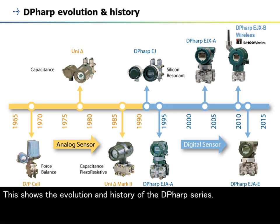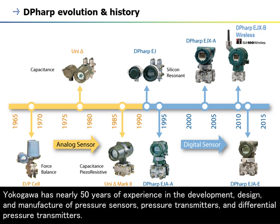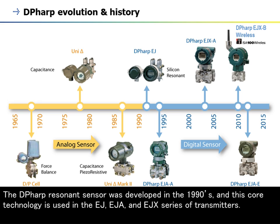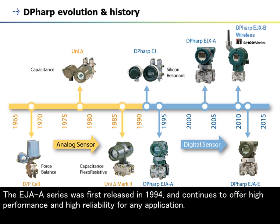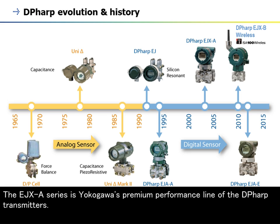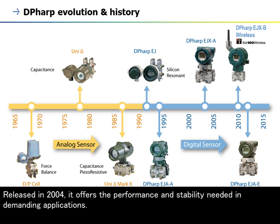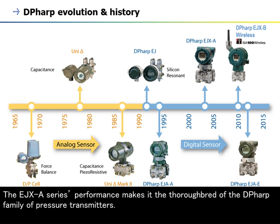Yokogawa has nearly 50 years of experience in the development, design, and manufacture of pressure sensors and transmitters. The DP-HARP resonance sensor was developed in the 1990s, and this core technology is used in the EJ, EJA, and EJX series of transmitters. The EJA series was first released in 1994 and continues to offer high performance and high reliability for any application. Released in 2004, the EJX series offers the performance and stability needed in demanding applications and is considered the thoroughbred of the DP-HARP family.